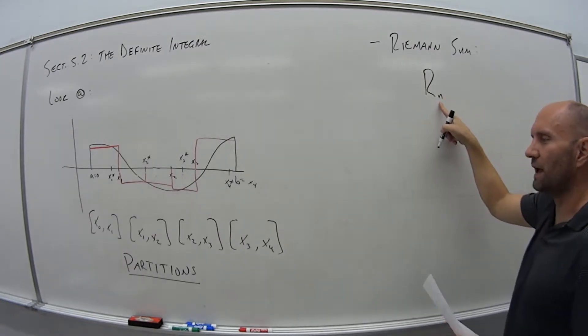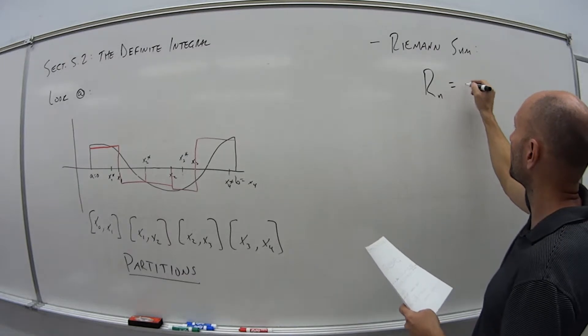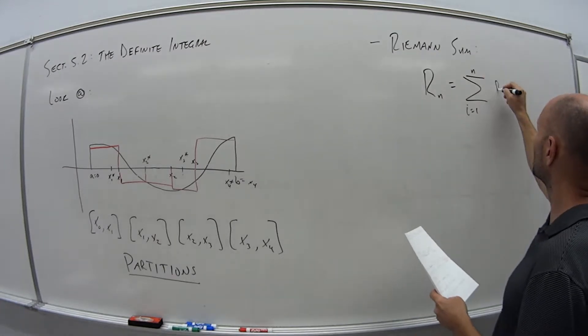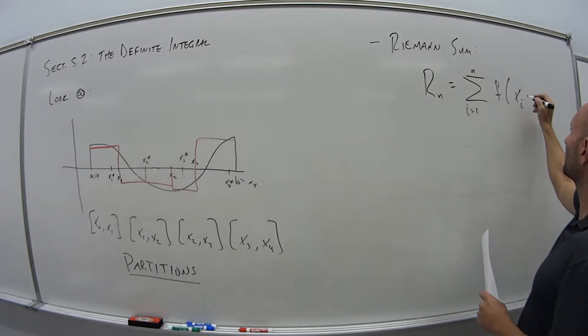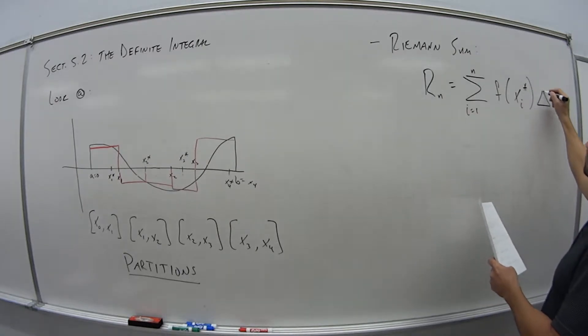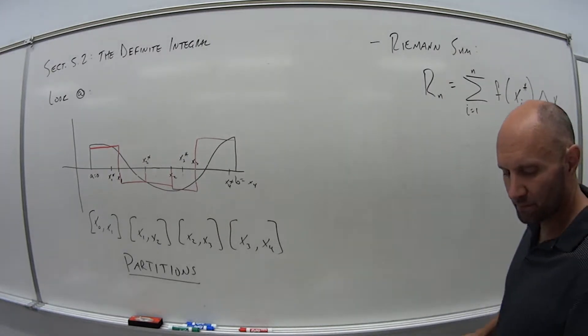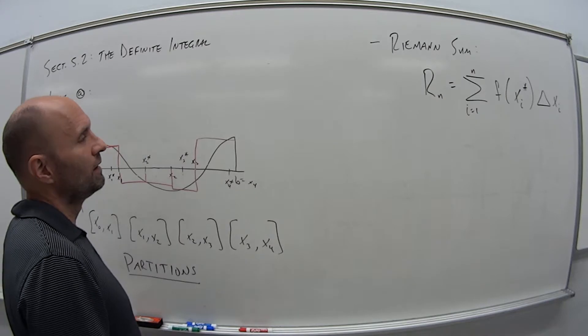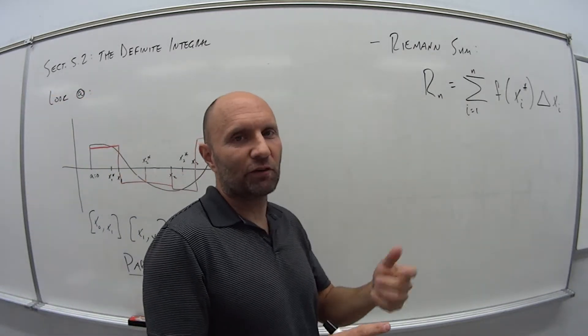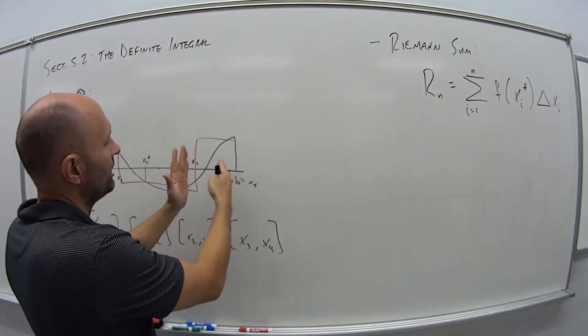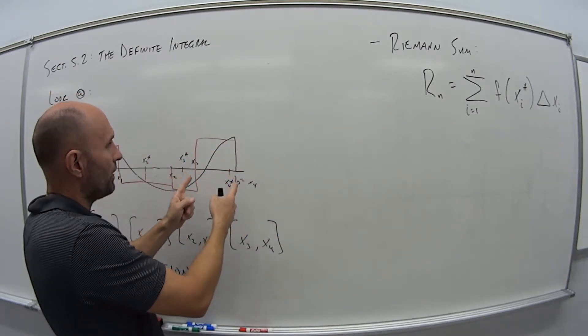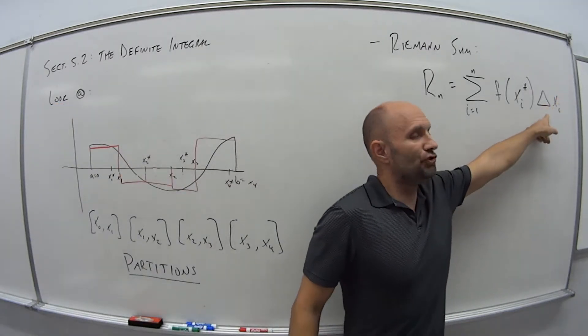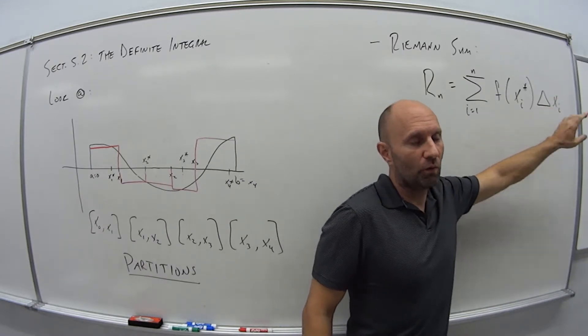The Riemann sum of N different intervals, N different partitions, is the sum, as i goes from 1 to N, of F of Xi star times delta Xi. So it's similar to what we saw in section 5-1, we're evaluating function, but now we're not necessarily having to pick an endpoint. We're picking some random point in the interval.